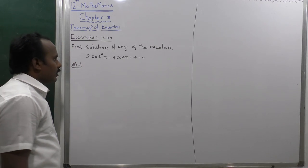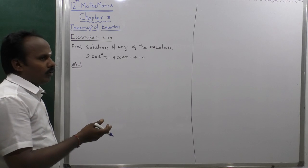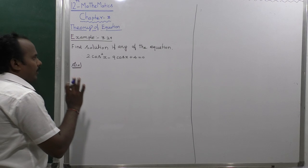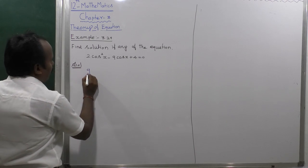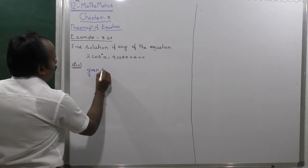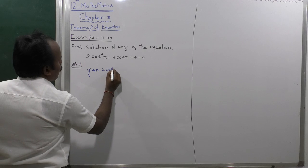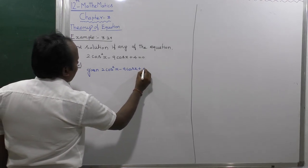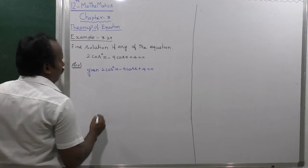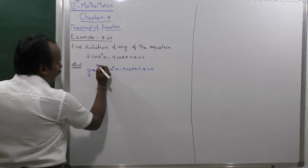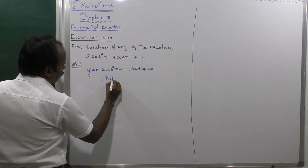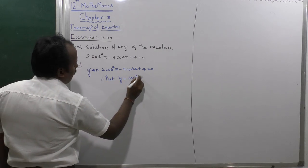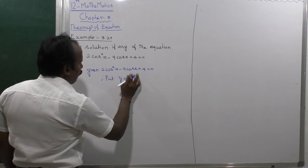So let's consider replacing the value. Rearranging the given equation: first, the given equation is 2cos²x - 9cosx + 4 = 0.